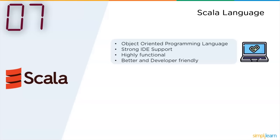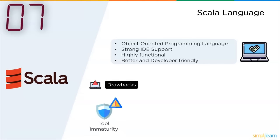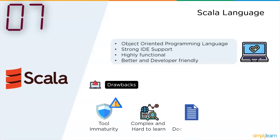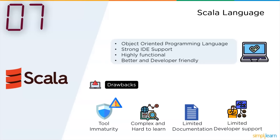The disadvantages making Scala an obsolete language: the tools in Scala are highly immature, it is complex and hard to learn, with limited documentation and limited developer support. Since it runs on JVM, it has no true tail-recursive optimization — as a workaround you can use the @tailrec annotation. Scala also has a limited developer pool, as not every Java developer can efficiently become a Scala developer.